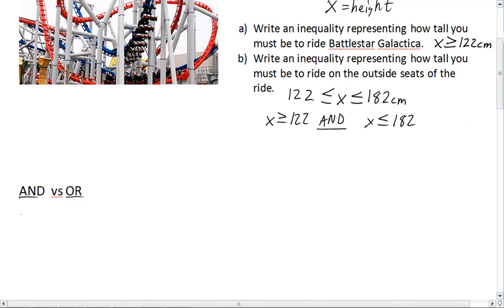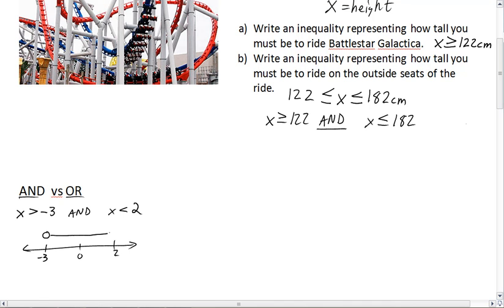For 'and': if x is greater than negative 3 and x is less than 2, x has to satisfy both conditions. On a number line with negative 3, 0, and 2 marked: x greater than negative 3 goes right from there, and x less than 2 goes left from there. Where are both true at the same time? From negative 3 to 2. So we put an open circle on negative 3, an open circle on 2, and shade everything in between — that region is both greater than negative 3 and less than 2.